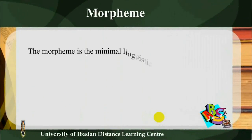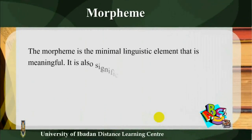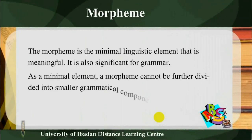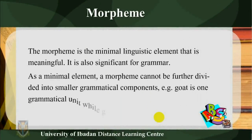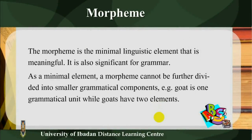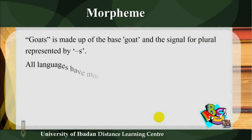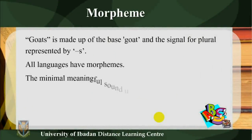The morpheme is the minimal linguistic element that is meaningful. It is also significant for grammar. As a minimal element, a morpheme cannot be further divided into smaller grammatical components. For example, 'goat' is one grammatical unit, while 'goats' has two elements: 'goats' is made up of the base 'goat' and a signal for plural represented by S.